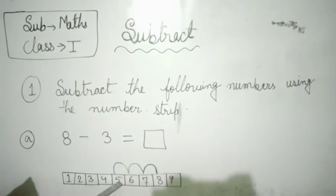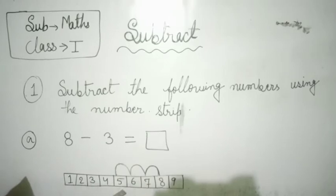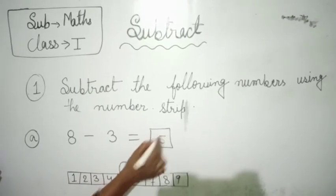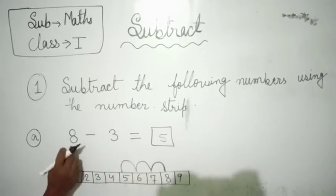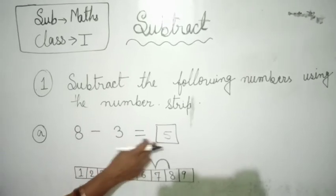We will reach at 5 and our result will be 5. Where have we reached? 5. Our answer is 8-3 is equal to 5. Okay students?